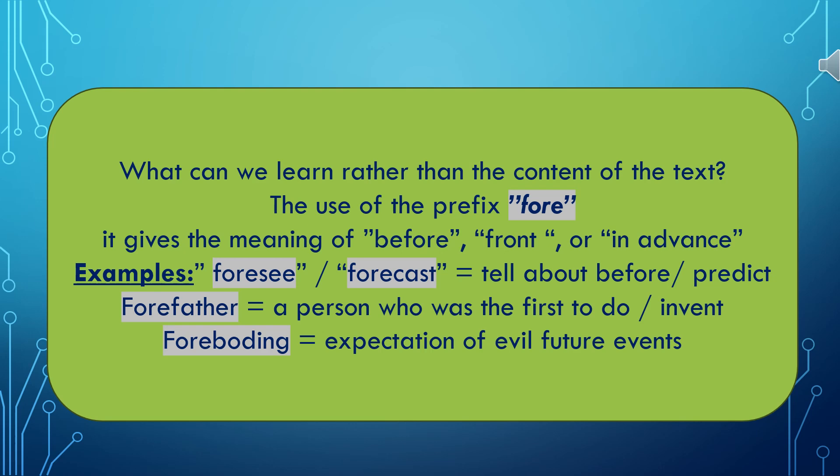Now we'll discuss two important things we can learn from the passage. Number one, the use of the prefix 'fore-' (F-O-R-E). This is a part we add before the beginning of some words to mean 'before,' 'front,' or 'in advance.' For example, the verb 'see' becomes 'foresee,' meaning to predict, to tell about something before it happens. 'Forefather' means a person who was the first to do, to invent, to set up something — for example, Abraham Lincoln was one of the forefathers of the United States, meaning one of the founders. 'Foreboding' is an expectation of an evil future event — the feeling that something bad will happen.